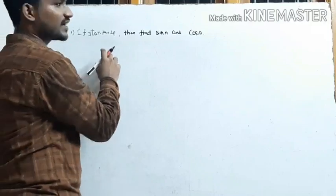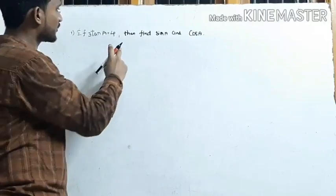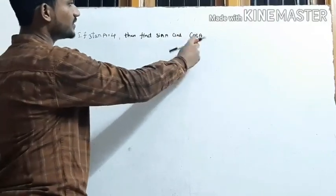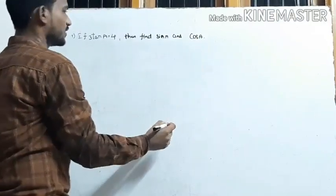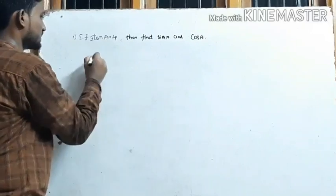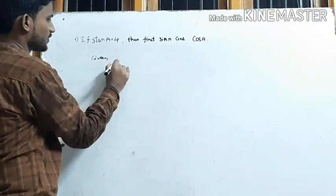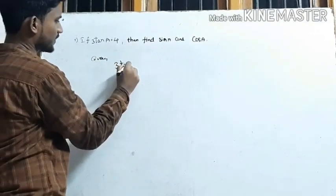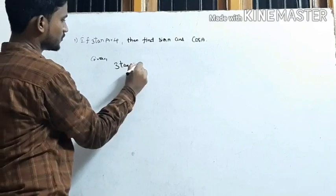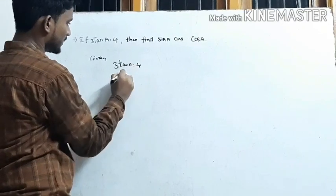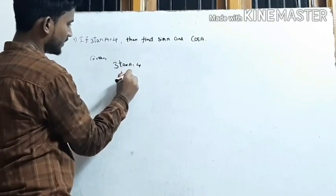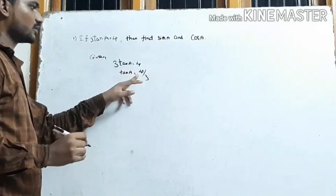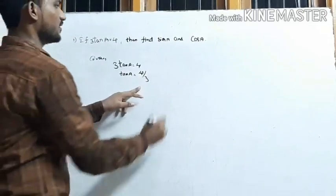Next problem: Given that 3 tan A equals 4, find sin A and cos A. From this, tan A equals 4/3. It is a ratio.